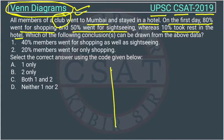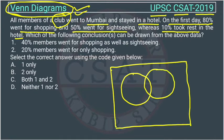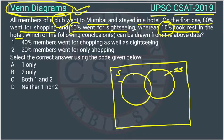This is a Venn diagram problem, so we can draw a Venn diagram. This rectangle will represent the total number of member in the club. This circle represents the people who went for shopping, and this circle represents the people who went for sightseeing. All figures are in percentage, so we will leave the percentage sign — it will not affect our answer.